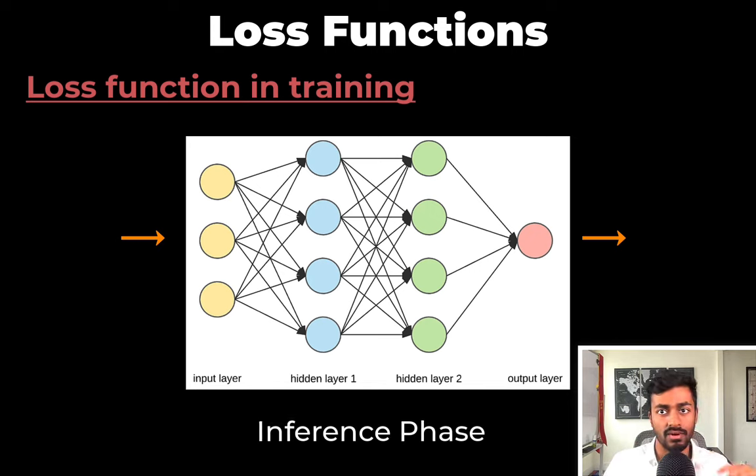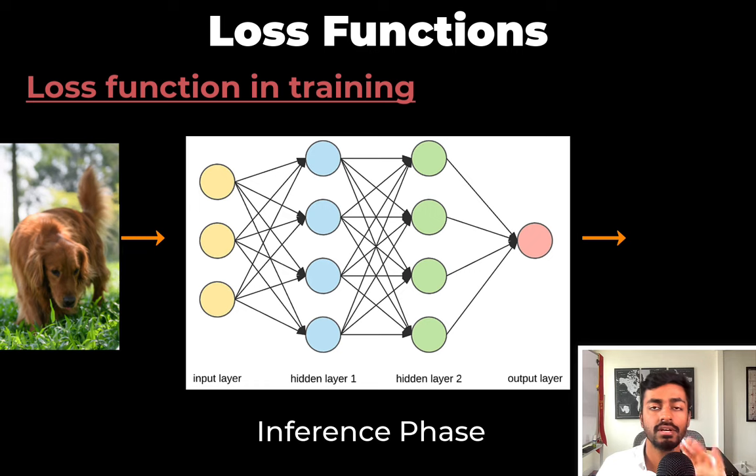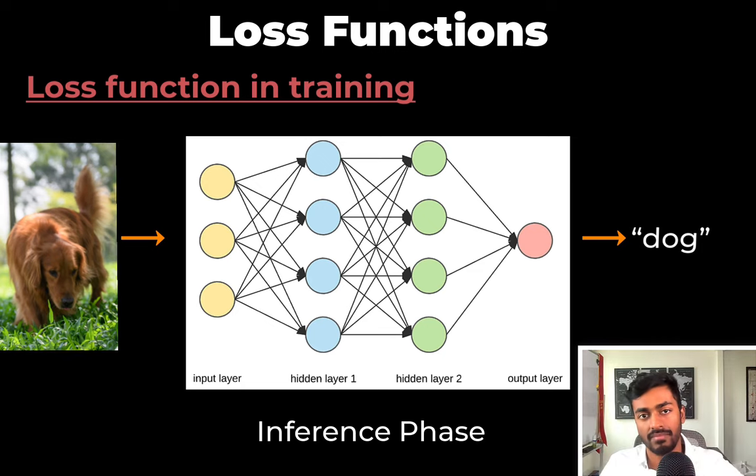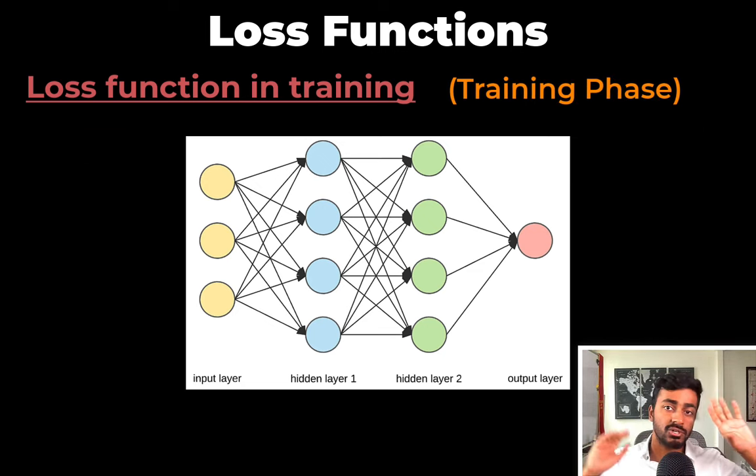Once trained, we move on to the inference phase where we pass an unseen image to the network and the network is ideally able to correctly identify whether it is a dog or not a dog. Now let's illustrate the training phase in more detail and highlight details about the loss function.